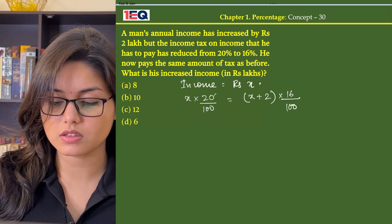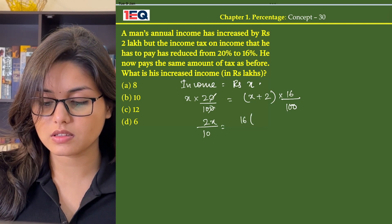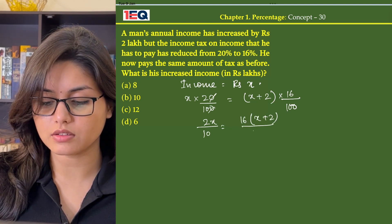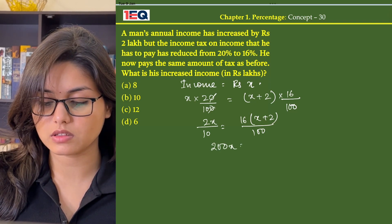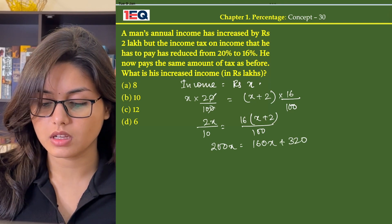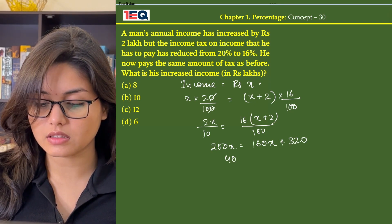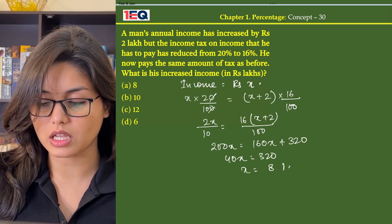Now on solving this we get 2X by 10 is equal to 16X plus 2 by 100. Now on cross multiplying, 200X is equal to 160X plus 320. That means 40X is equal to 320 and the value of X equals 8 lakhs.